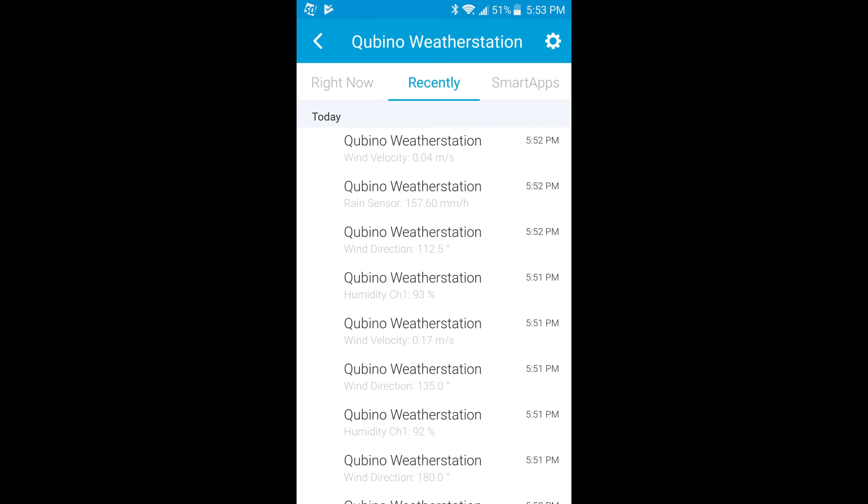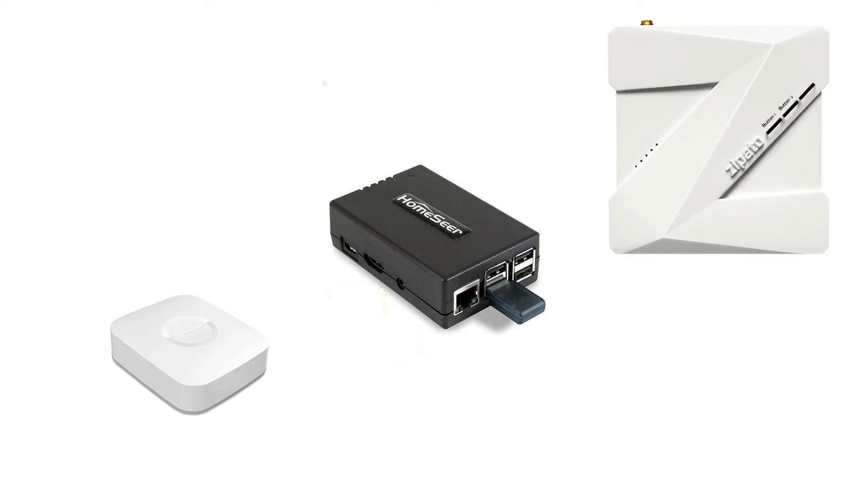The Weather Station currently retails for $200. It's also important to note that at the time that we made this video, the Cubino Weather Station is only supported by HomeSeer, the SmartThings Hub, Zippado Zippa Box, and the Zippado Zippa Tile. Our tests were all conducted with the SmartThings Hub. If your hub is not mentioned, you may want to check with the manufacturer for support.